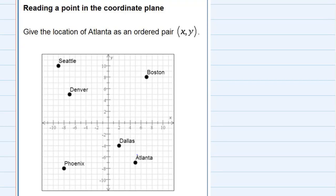Reading a point in the coordinate plane, we're asked to give the location of Atlanta as an ordered pair. Atlanta is down here.